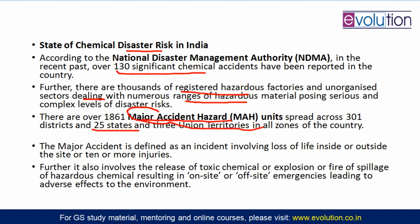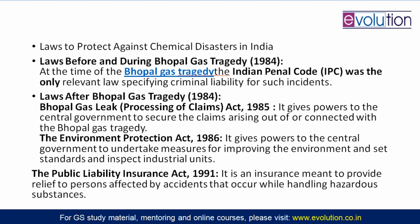A major accident hazard unit is defined as an incident involving loss of life inside or outside the site, or 10 or more injuries. Such places can also involve release of toxic chemicals, explosions, fire, or spillage of hazardous chemicals. Styrene itself is a flammable liquid and can cause problems both inside and outside a factory. Do we have any law to protect ourselves from chemical hazards? Before the Bhopal gas tragedy in 1984, the Indian Penal Code was the only relevant law specifying criminal liability for such incidents.